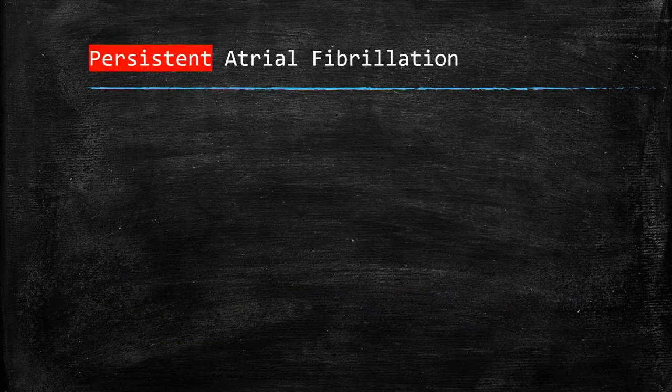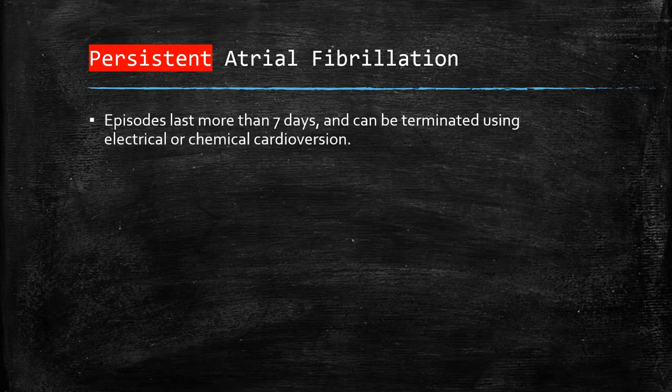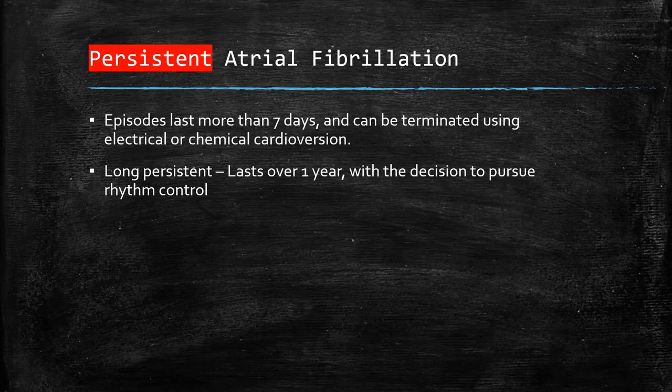Persistent atrial fibrillation is defined as episodes lasting more than seven days, with options of both chemical and electrical cardioversion. Long-persistent AF is described as AF lasting over one year, with the decision to pursue rhythm control — restoring sinus rhythm via cardioversion, pharmacological agents of class 1A, 1C, and 3, or non-pharmacological options such as catheter ablation, pacing, or surgery.